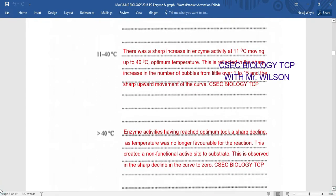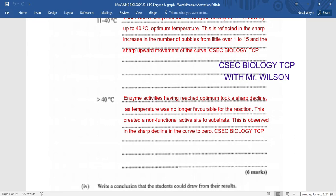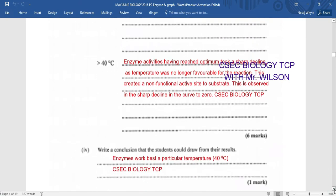Let us look at what happened above 40 degrees Celsius. Enzyme activity having reached optimum took a sharp decline as temperature was no longer favorable for the reaction. This created a non-functional active site to the substrate. This is observed in the sharp decline in the curve to zero. So it declined sharply, significantly, from 40 down to 0 degrees Celsius. We would have got 6 marks if we mastered that skill.